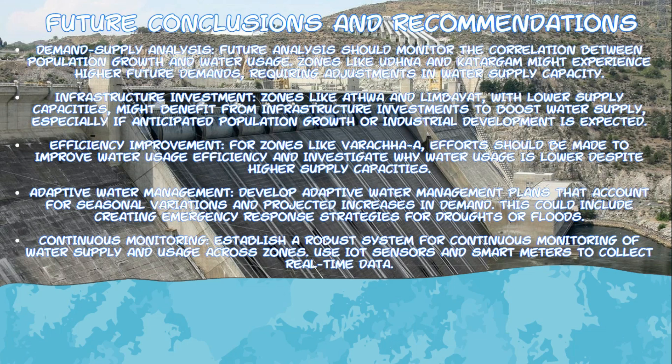For infrastructure investments, zones such as Athwa and Limbayat currently have lower supply capacities, which may impede their ability to meet future water demands, especially with anticipated population growth or industrial development. Investing in infrastructure improvements in these zones is crucial — this could involve upgrading existing water supply systems, expanding reservoir capacities, or enhancing water distribution networks to prevent future water shortages and ensure equitable distribution.